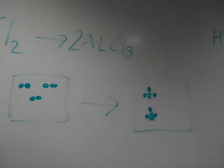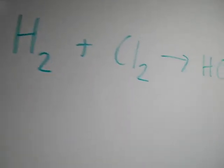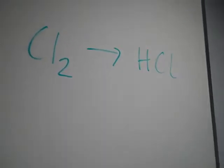2Al plus 3Cl2 gives 2AlCl3. Now we have another equation: H2 plus Cl2 gives HCl.